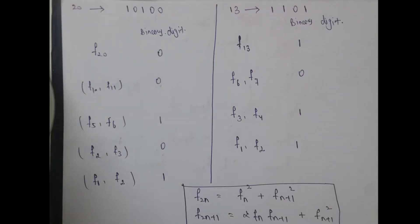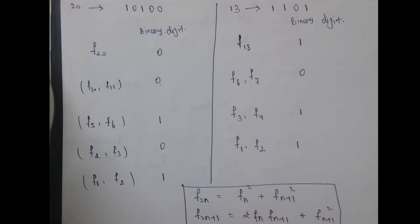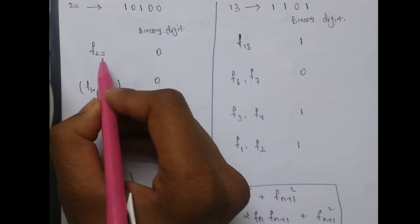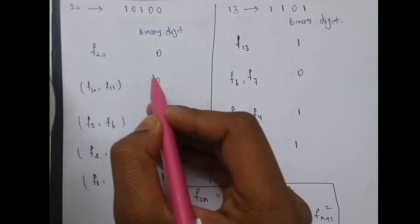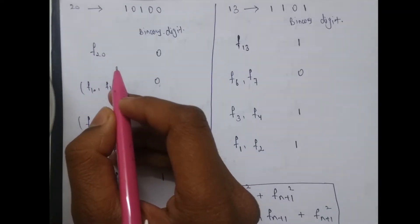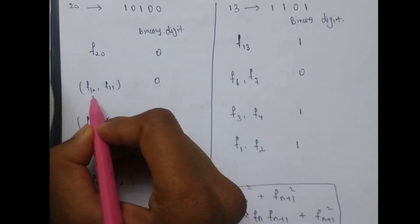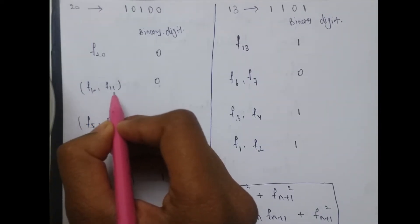As we know that for calculating f(2n) we need f(n) and f(n+1). So in our example, for calculating f(20), that is f(2n), we need n which is half of 20, that is f(10), and f(n+1) which is f(11).